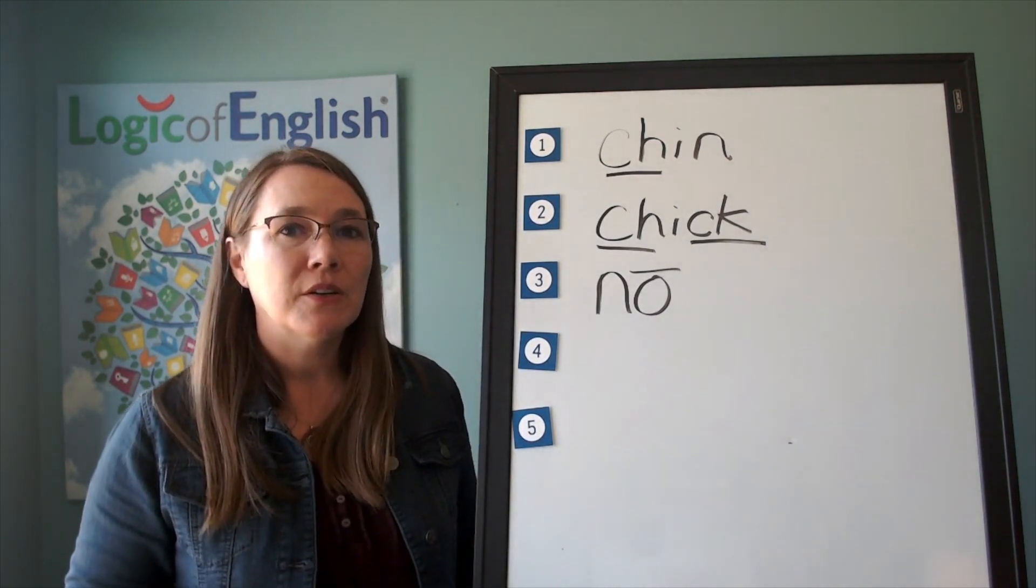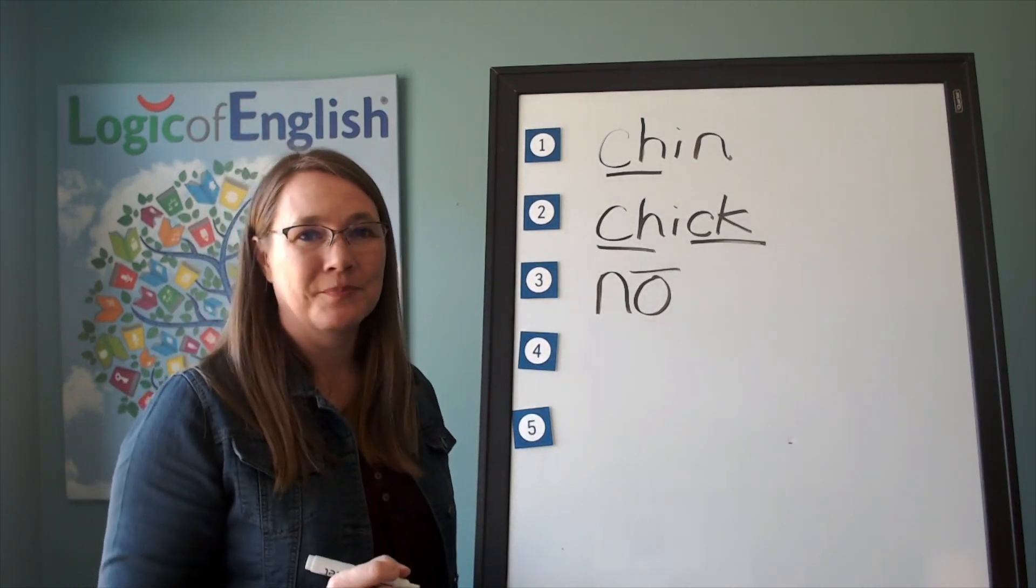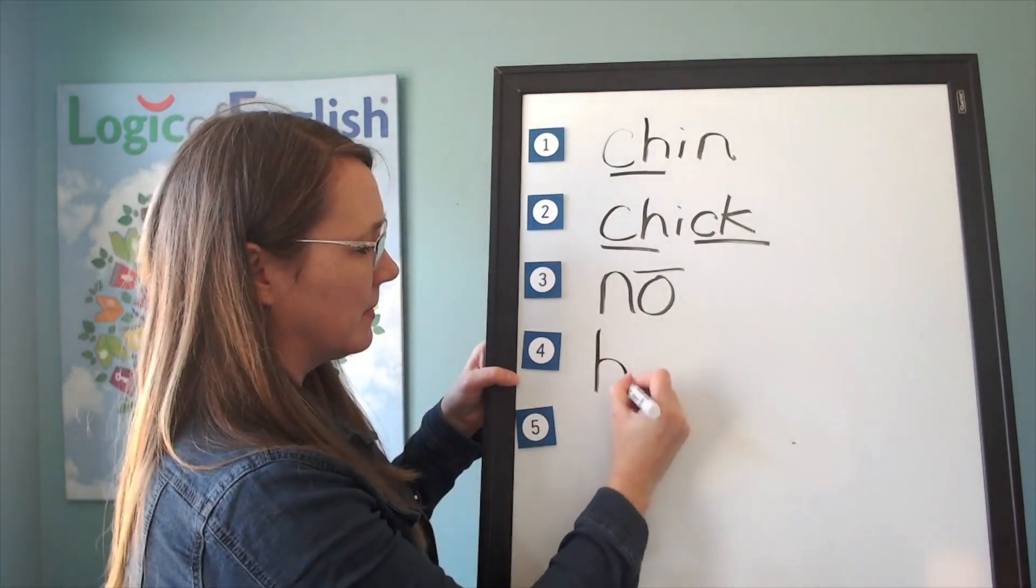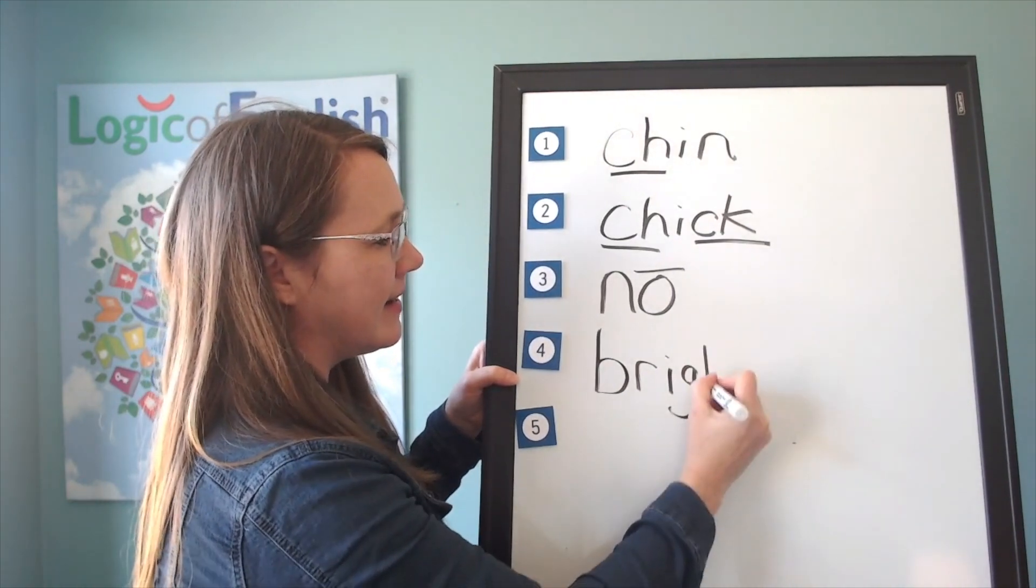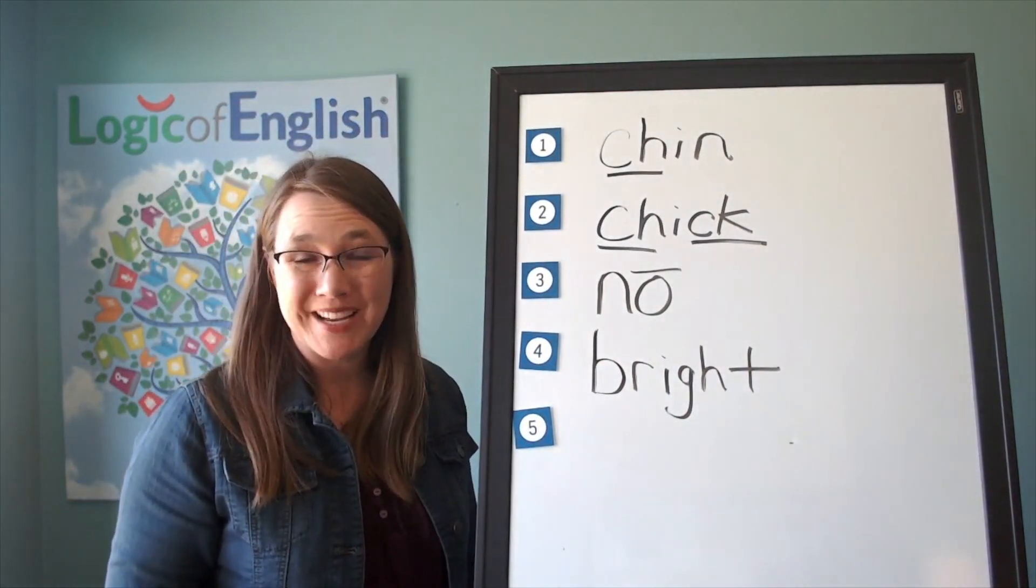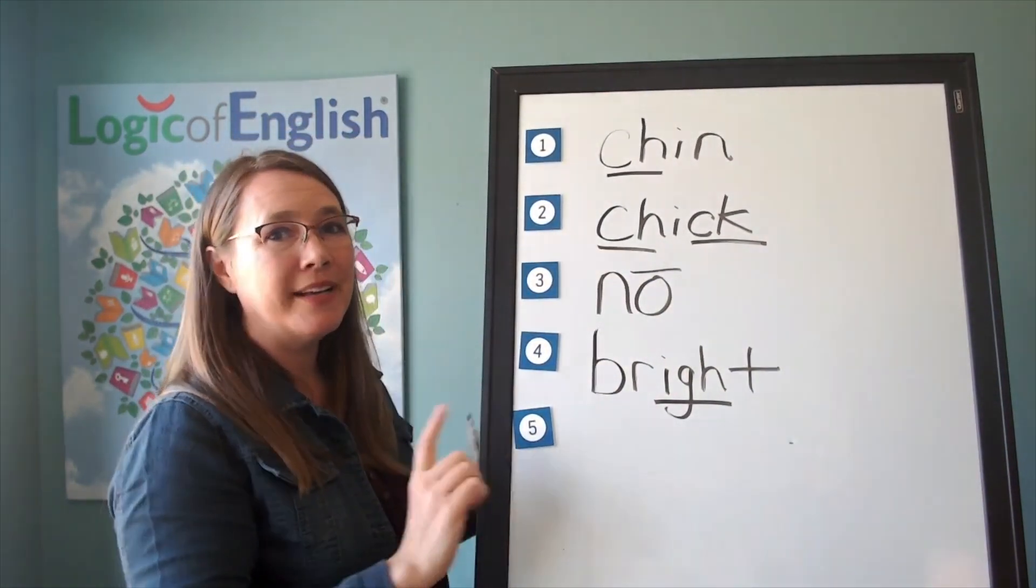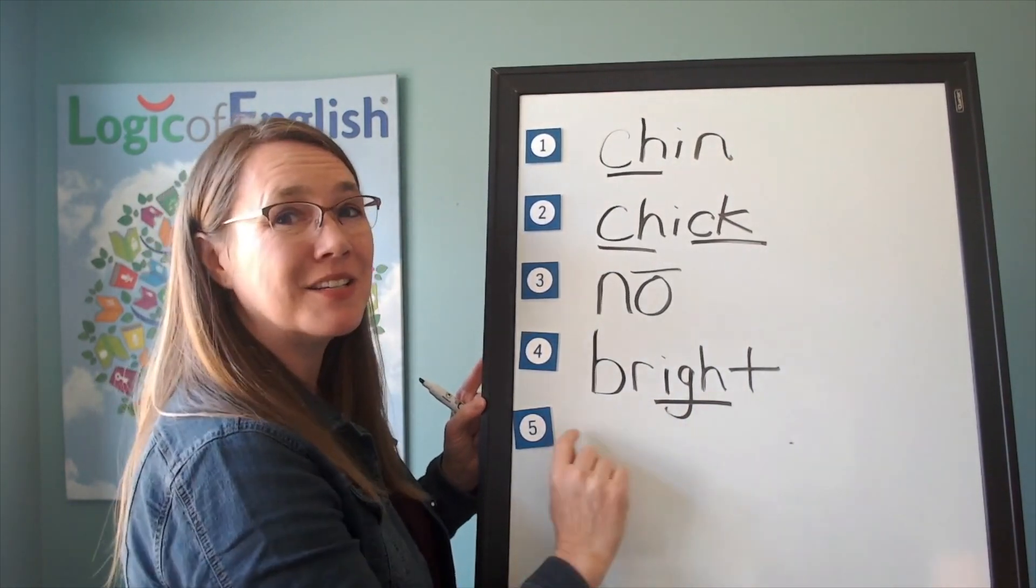B-r-igh-t. Good job. All right. Help me to write it. B-r-igh-t. And how will we mark bright? We will underline the igh. Ready? Let's read it. B-r-igh-t. Bright.